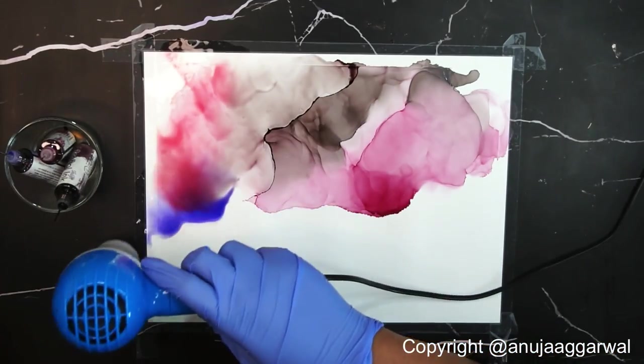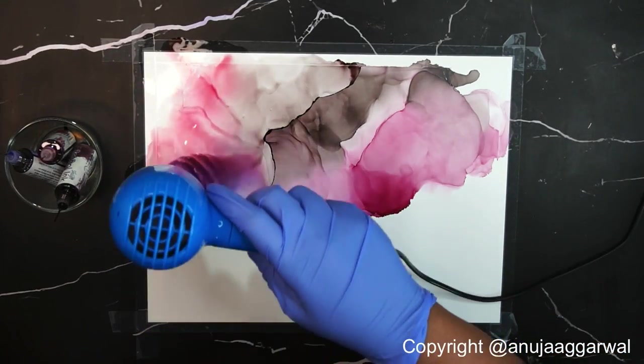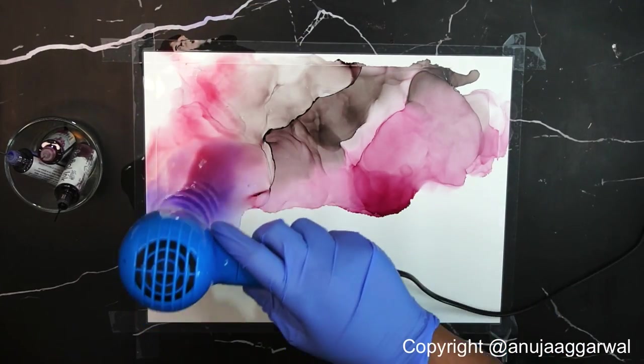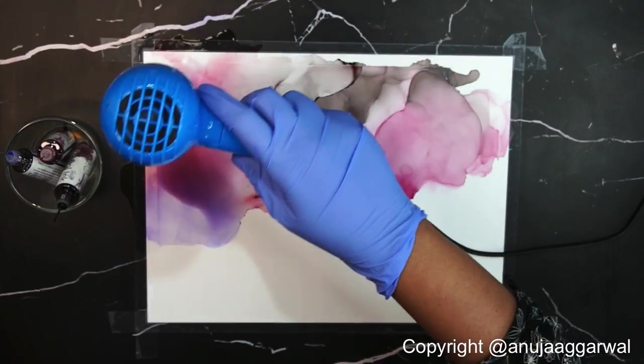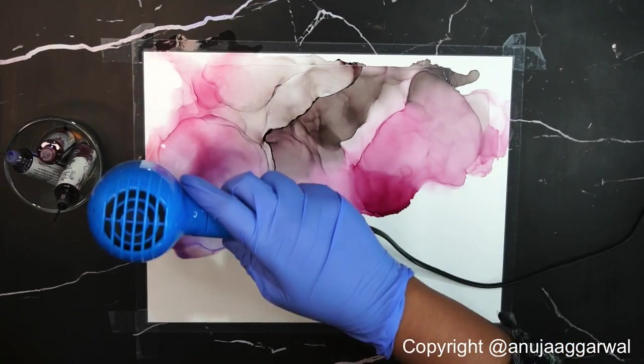Just let the ink do their magic, move them around from the top like this. In the other video I will show you how to move it from the sides, but right now I am drying it from the top and that creates different kinds of textures and lines.